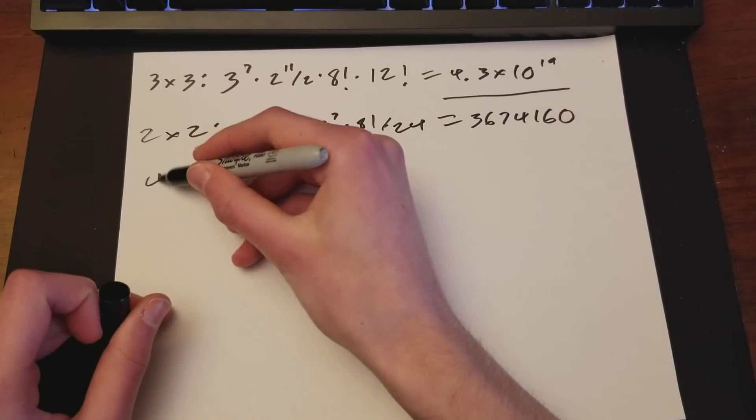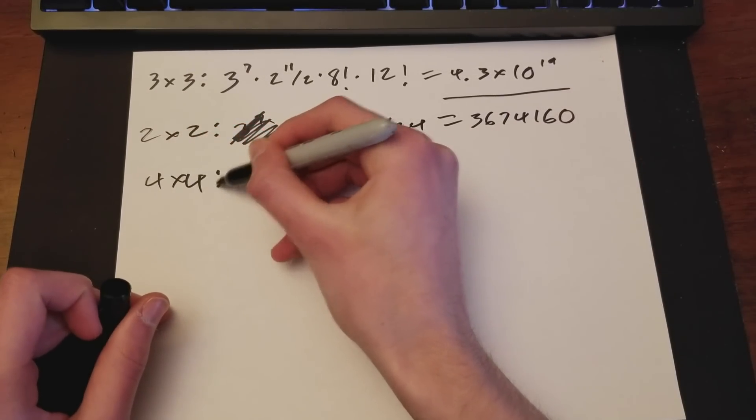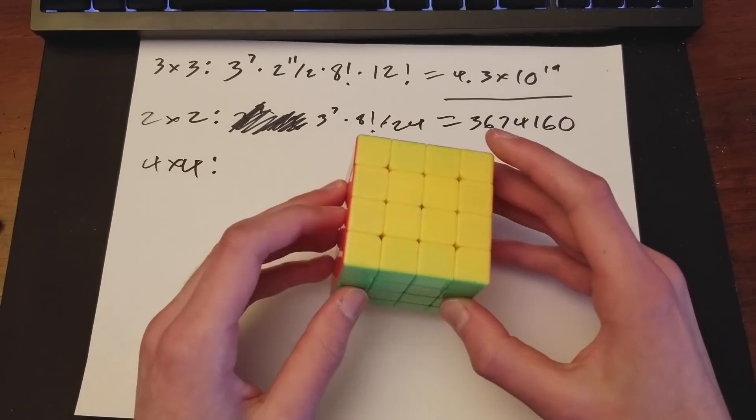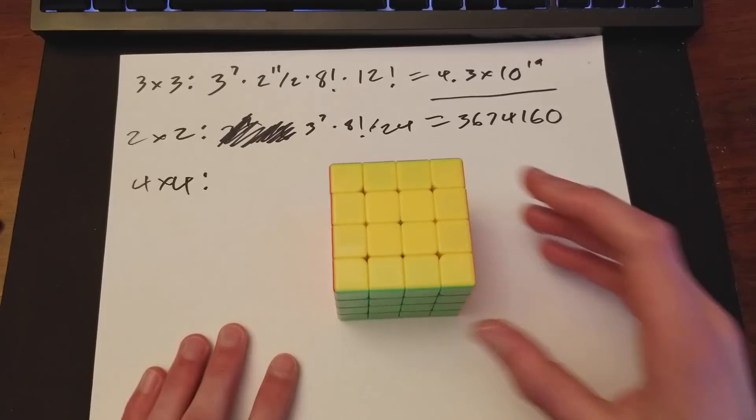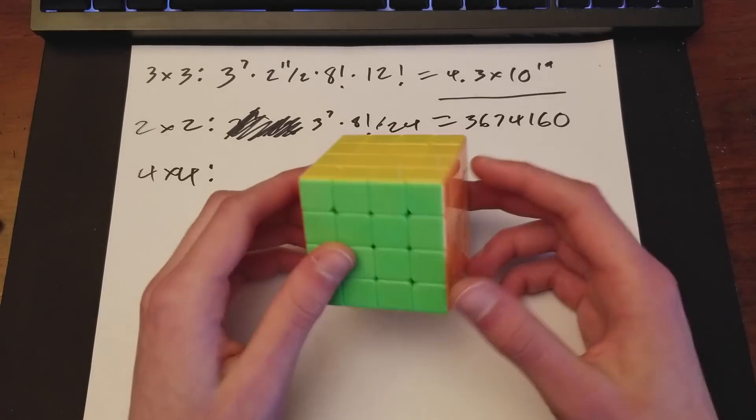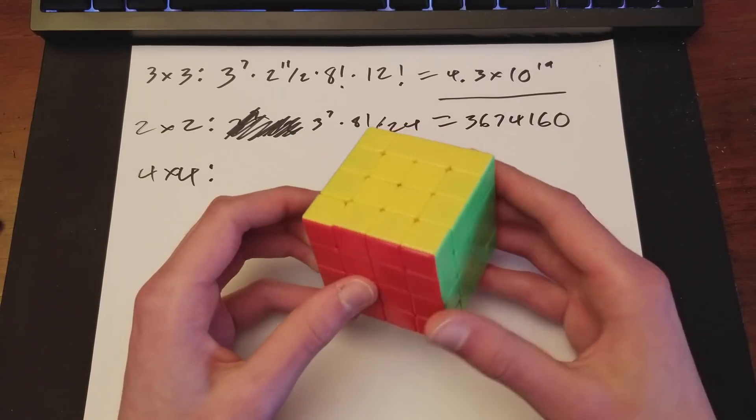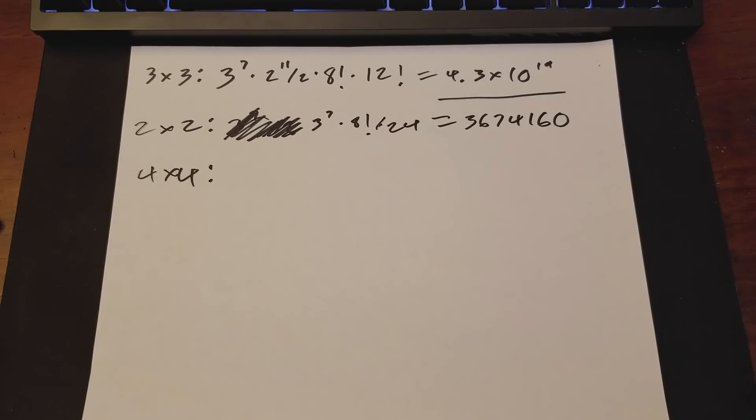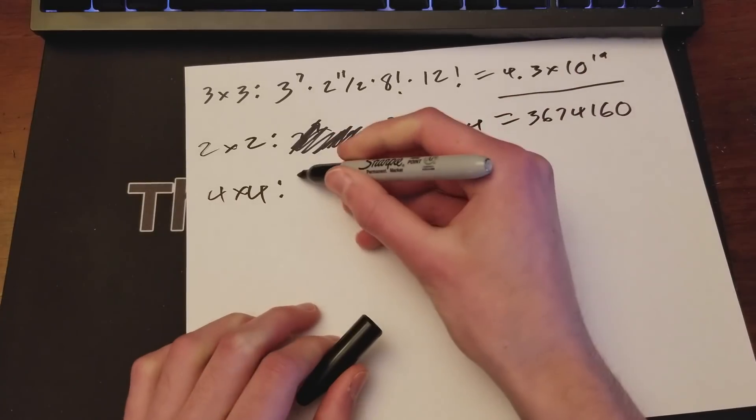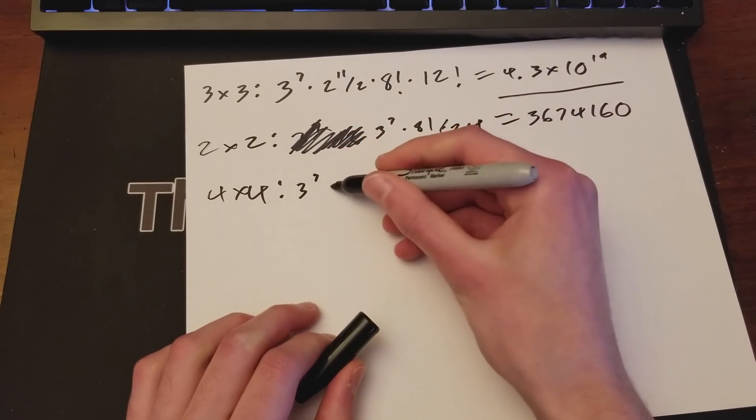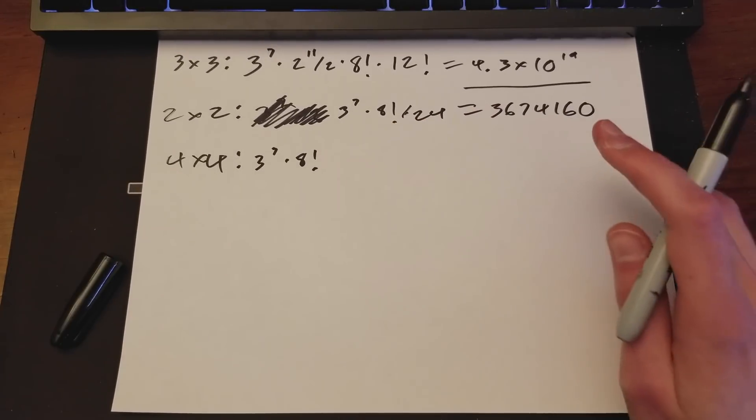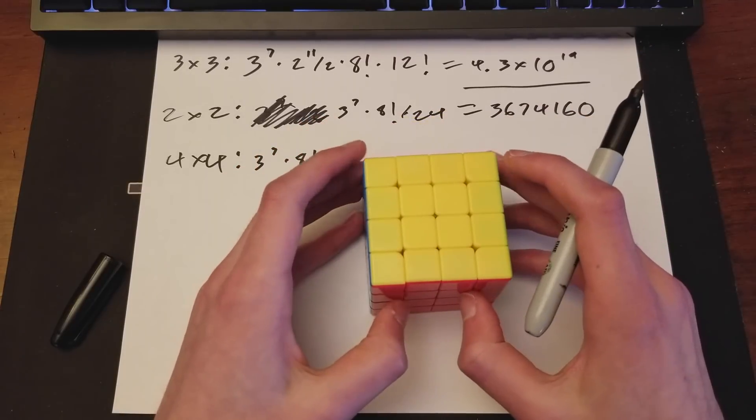You just need to find the number of ways a certain position can be rotated. So if you think about it this way, for each face, you have four options. So that leaves us with 4 times 6, which is 24. So if you divide by 24, that results in the number. And then this one's significantly smaller. So that's the 2x2.